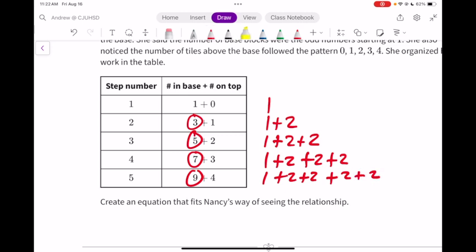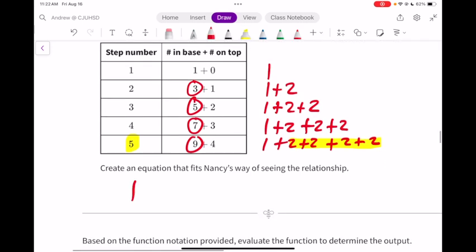How many 2's there are. There are 4 2's. But compare that to the step number, because remember, that's the one we're going to call S. That's the one we're going to generalize with. So this part of the formula would just be 1 plus... Now notice how the step number, if you take away 1 from it, it tells you how many 2's you're going to have.